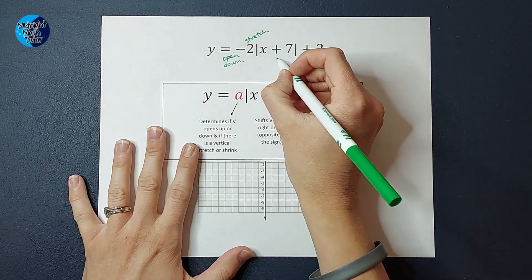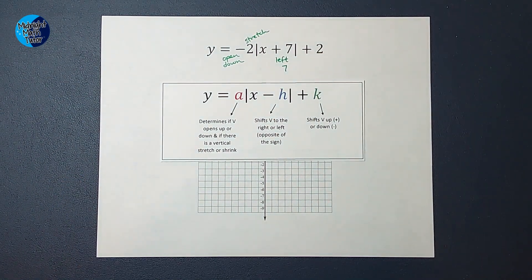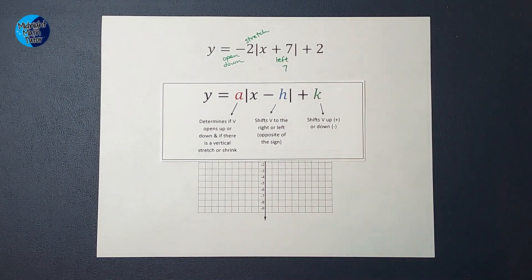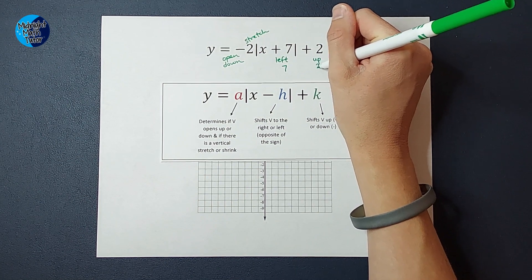And then that plus 2 on the back, we stick with the sign, so it tells me we are going to move it up 2.